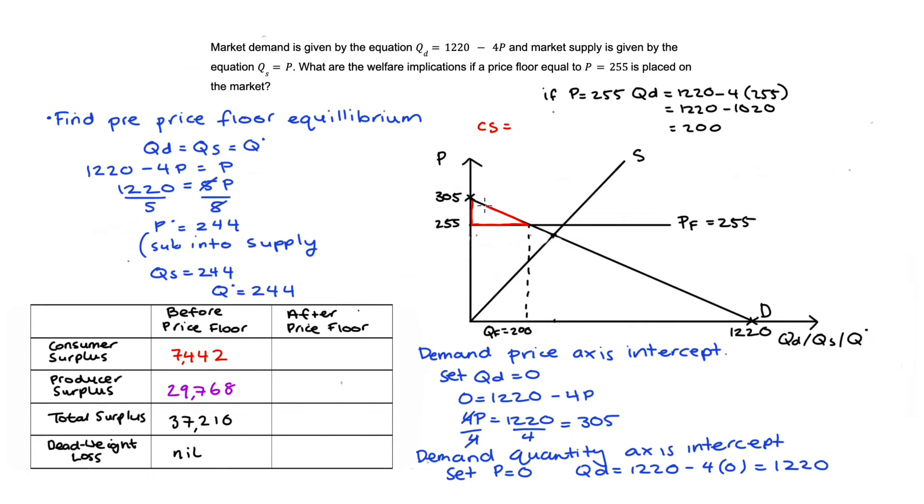With this information we can find our consumer surplus and producer surplus. Our consumer surplus will just be this triangle here, the area above price below demand. Our base is 200. Our height is 305 - 255 = 50. So we get 1/2 × 200 × 50 = 5,000.